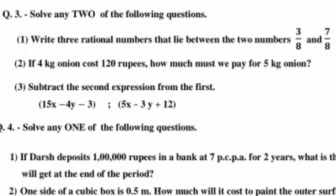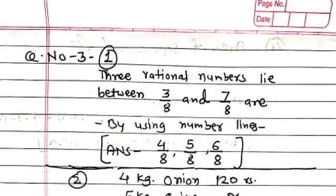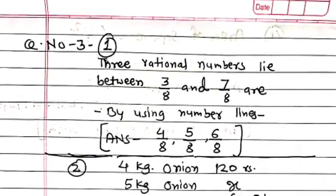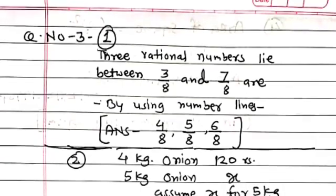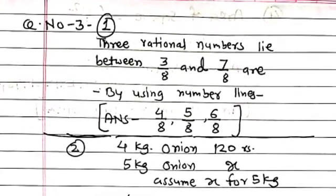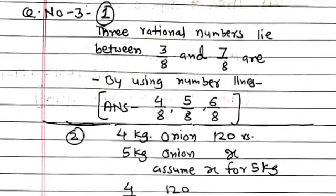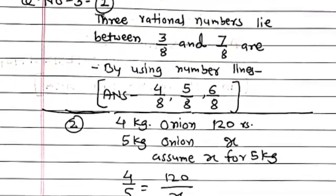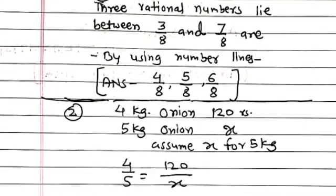Next question: write three rational numbers that lie between 3 upon 8 and 7 upon 8. The answers of these questions are given on a separate slide. Question number 3, part one: three rational numbers lying between 3 upon 8 and 7 upon 8. By using a number line, the answers are 4 upon 8, 5 upon 8, and 6 upon 8.